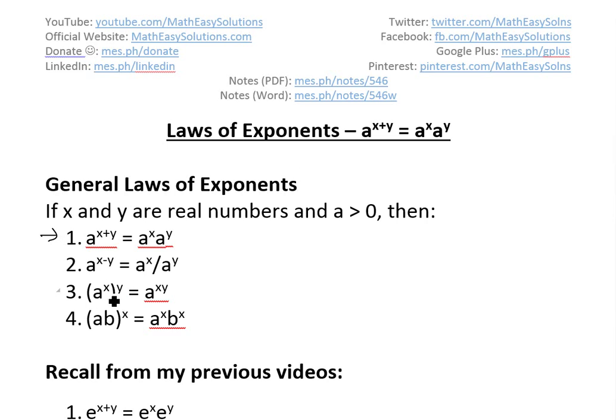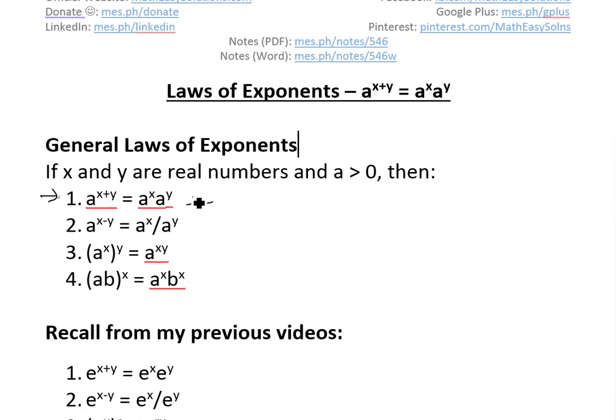And if there's a bracket, (a^x)^y, it's the same thing as writing a to the power of xy. But if you have (ab)^x, that's the same thing as writing a^x times b^x. I'll prove all these in later videos. Today, I'll prove this one right here.